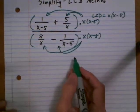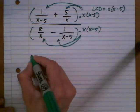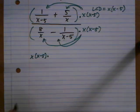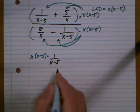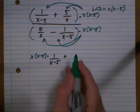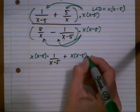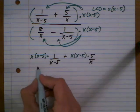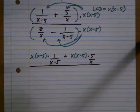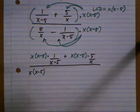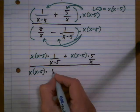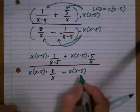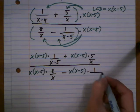So let's go ahead and do that out. On the top we start with x times x minus 5, and that's multiplying 1 over x minus 5, and then plus again the LCD, x times x minus 5, and that's multiplying 5 over x. On the bottom we get x times x minus 5 multiplying 8 over x, minus x times x minus 5 multiplying 1 over x minus 5.